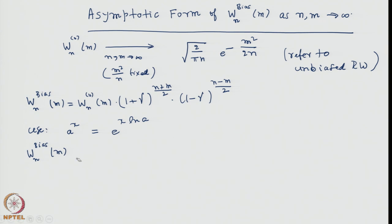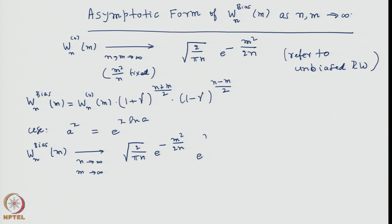We go straight to the asymptotic form as n tends to infinity and m tends to infinity. This will be square root of 2 by pi n, times e to the power minus m squared by 2n. Regarding the (1 plus gamma) functions, we use the exponentiating logic and write it as e to the power (n plus m)/2 times ln(1 plus gamma) plus (n minus m)/2 times ln(1 minus gamma).